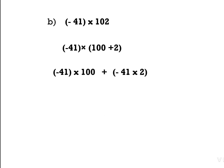Minus 41 is common for 102. We distribute −41 into 102: −41 × 100 = −4100, and −41 × 2 = −82. Adding the numbers gives −4182. Now we can find the answer very easily.